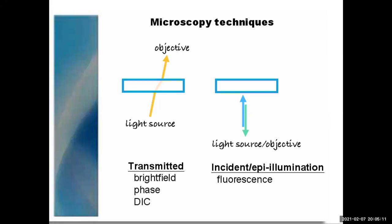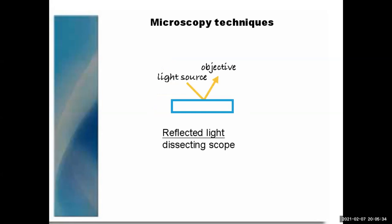Two ways of approaching microscopy: transmitted light and reflected light. Transmitted light techniques include bright field, phase, and DIC. Reflective light techniques are often known as incident light or epi-illumination — a lot of names for the same thing. The big one we're going to talk about is fluorescence. When talking about a dissecting scope, it's often called reflected light — different fields use different terminology.